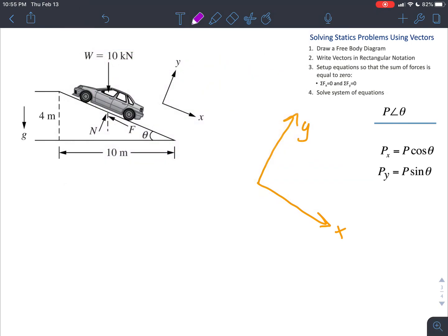So we've got our friction force, which is acting going opposite the x-axis to keep the car from sliding down the ramp. We have our normal force, which is acting upwards relative to the ramp to keep the car from crashing through the surface of the ramp.